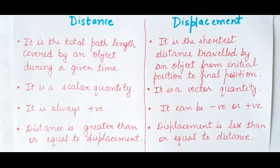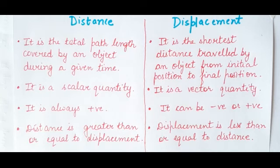Differences between distance and displacement: Distance is the total path length covered during a given time; displacement is the shortest distance from initial to final position. Distance is a scalar quantity; displacement is a vector quantity. Distance is always positive; displacement can be negative, positive, or zero. Distance is greater than or equal to displacement; displacement is less than or equal to distance.